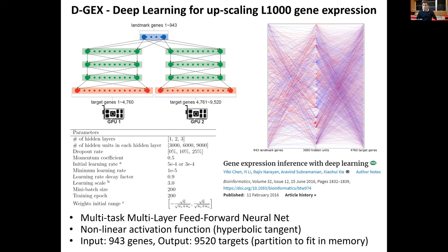One approach was taken by an MIT alum studying gene expression inference with deep learning from the L1000 dataset. They built a multi-task, multi-layer feedforward neural network starting with 1,000 landmark genes, trying to predict the expression of 9,520 target genes partitioned into two halves due to memory constraints back in 2015. The model uses 3,000 hidden units learning combinations of landmark genes.